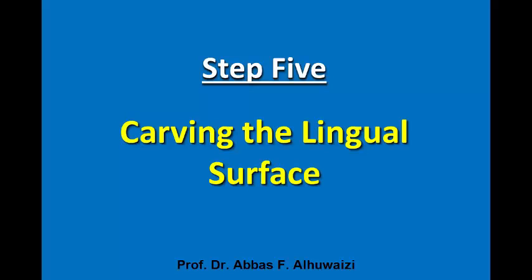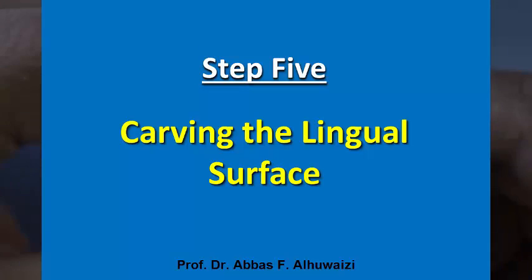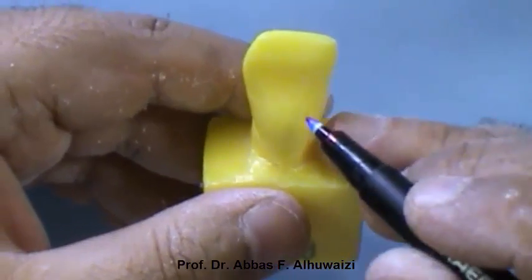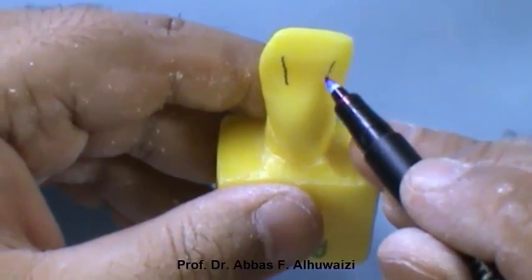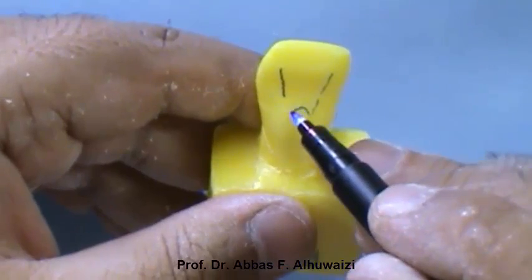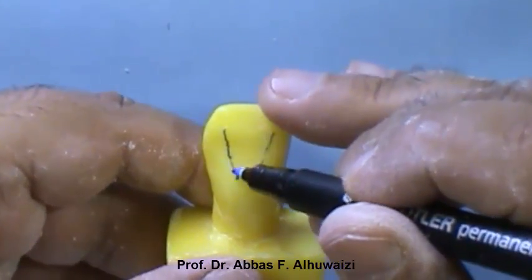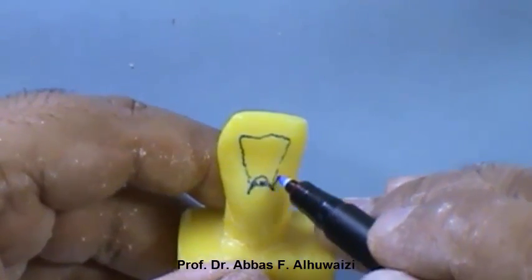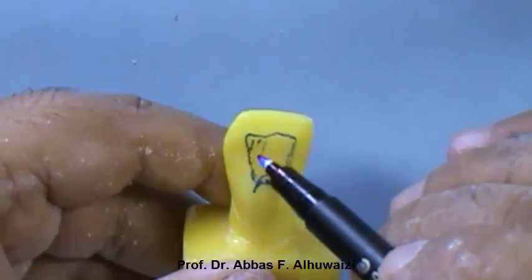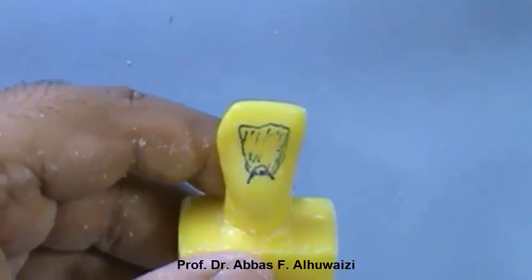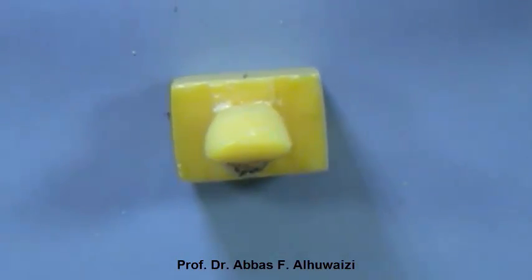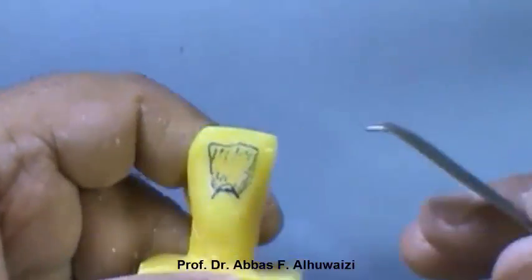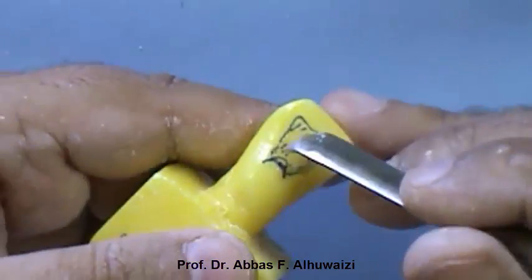Step 5: Carving the lingual or palatal surface. The palatal surface of the central incisor is a concavity that is bound proximally by the mesial and distal ridges, incisally by the incisal ridge, and cervically by the cingulum.